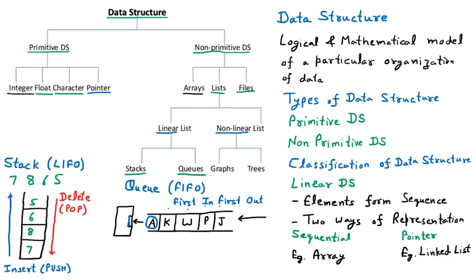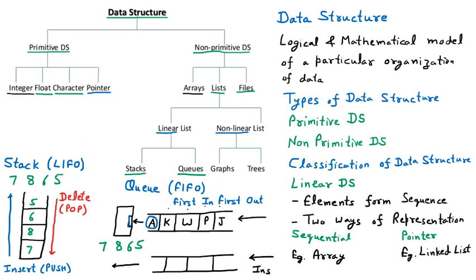Now we relate this with numbers, taking the same numbers seven, eight, six, five. We are maintaining a queue with four spaces. This is the direction of insertion on one side and the direction of deletion on the other side. So we are inserting from one end and deleting from the other end.